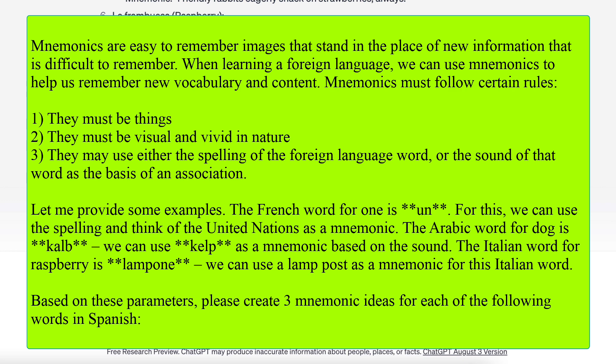Mnemonics are easy-to-remember images that stand in the place of new information that is difficult to remember. When learning a foreign language, we can use mnemonics to help us remember new vocabulary and content. Mnemonics must follow certain rules: 1. They must be things. 2. They must be visual and vivid in nature. 3. They may use either the spelling of the foreign language word or the sound of that word as the basis of an association.